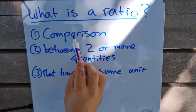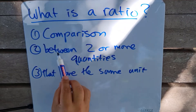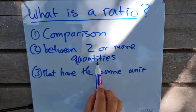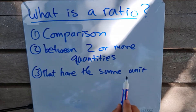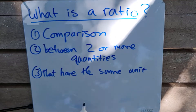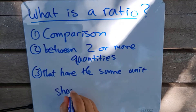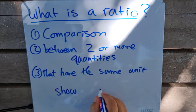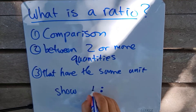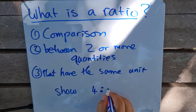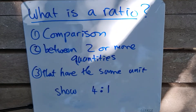Number three, quantities that have the same unit. So to go through it again: what is a ratio? It is a comparison between two or more quantities that have the same unit. Now we show this ratio by means of a colon — for example, the ratio of four to one.